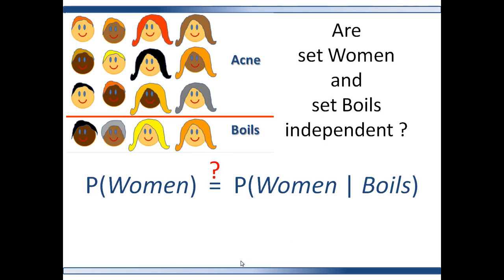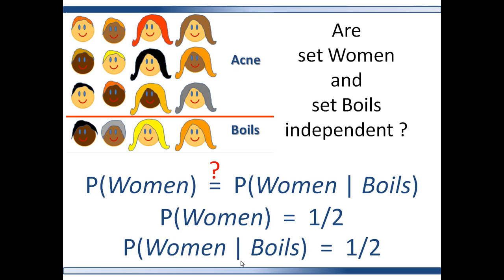Let's look at the sets women and Boyle's. Are the sets women and Boyle's independent? The probability of set women is one-half, and the probability of women given Boyle's is also one-half, because the intersection of women and Boyle's is two out of sixteen and the probability of Boyle's is four out of sixteen, and two divided by four gives you one-half.